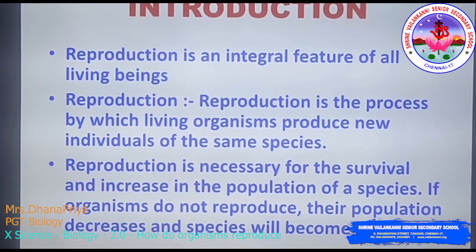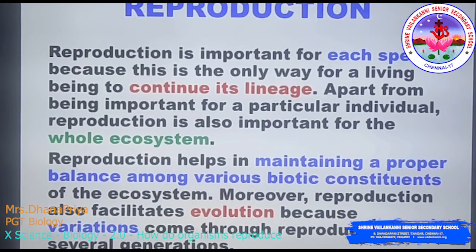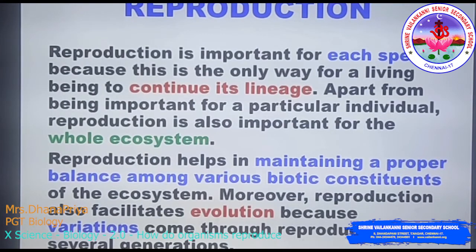Reproduction is necessary for the survival and increase in the population of species. If organisms do not reproduce, their population decreases and species will become extinct. Reproduction is also important for the whole ecosystem — we need reproduction to maintain a proper balance among various biotic constituents of the ecosystem.